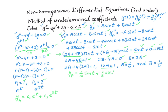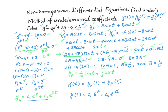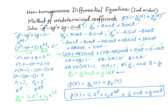Now we have both the particular solution and the homogeneous solution. The general solution is y(t) equals y_h(t) plus y_p(t), which is c₁ e^t plus c₂ e^(3t) plus (1/10) sin(t) plus (1/5) cos(t). This is the general solution to this differential equation. I hope this discussion was helpful — thank you very much.